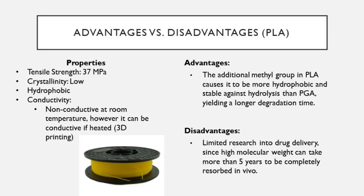Comparing the three polymers: PLA is the strongest of the three, with the highest tensile strength around 37 MPa, relatively low crystallinity, and non-conductive at room temperature — though it becomes conductive when heated, making it ideal for 3D printing. The additional methyl group on the backbone makes PLA more hydrophobic and thus more stable against hydrolysis compared to PGA. While advantageous for disposable products, this is a disadvantage in drug delivery, since high molecular weight PLA can take more than five years to be completely reabsorbed in vivo.